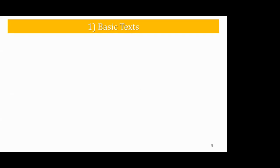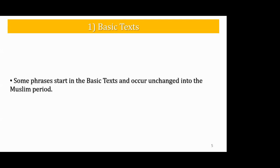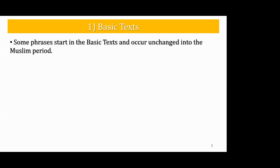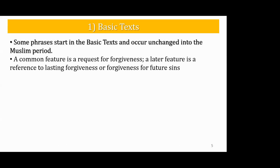The main thing to bear in mind is that these basic texts are pre-Islamic — even though they occur in Islamic times, they have pre-Islamic characteristics. Some phrases start in the basic texts and occur unchanged into the Muslim period, so there's an overlap. A common feature is a request for forgiveness. A later feature is a reference to lasting forgiveness or forgiveness for future sins — when we see this type of forgiveness, it indicates a much later inscription.